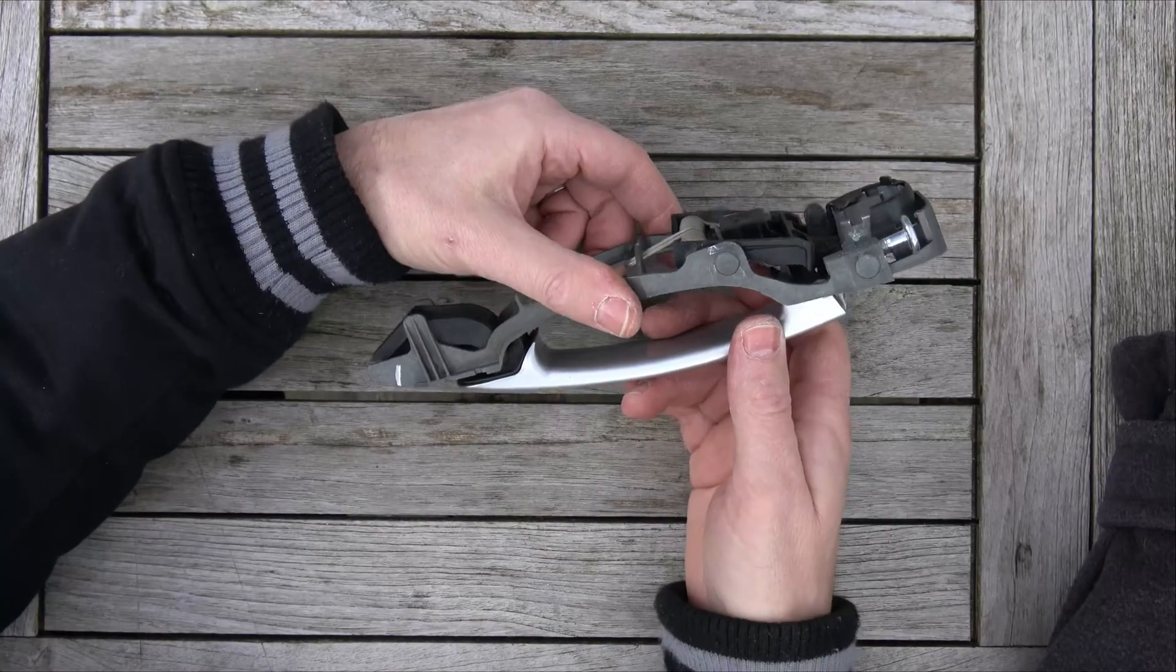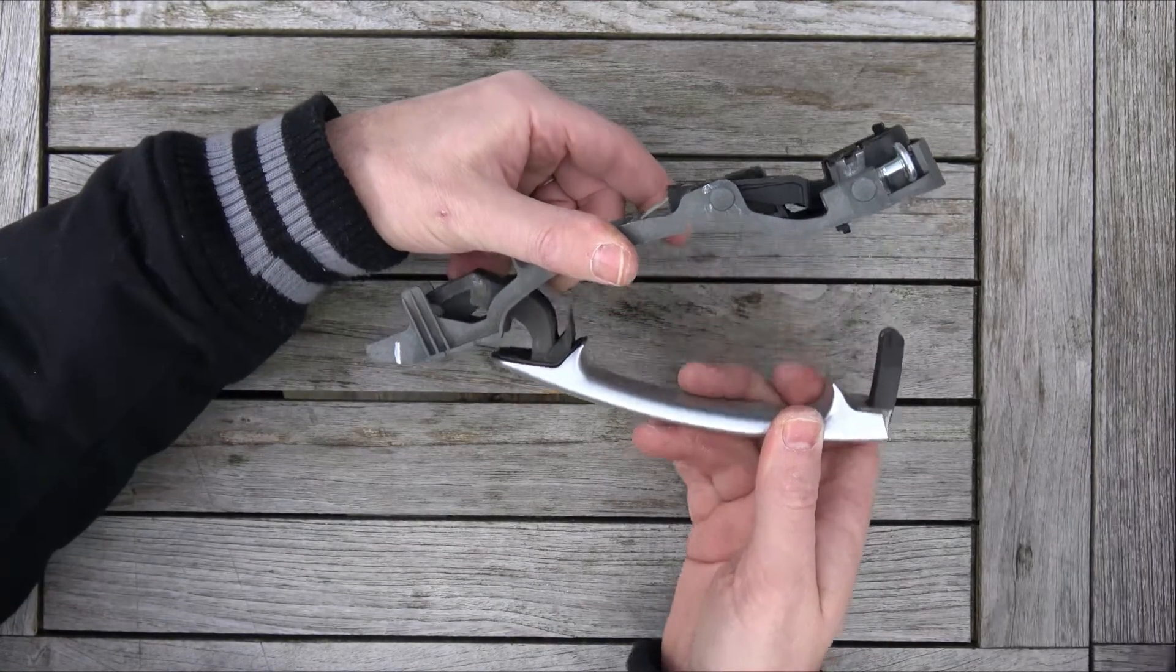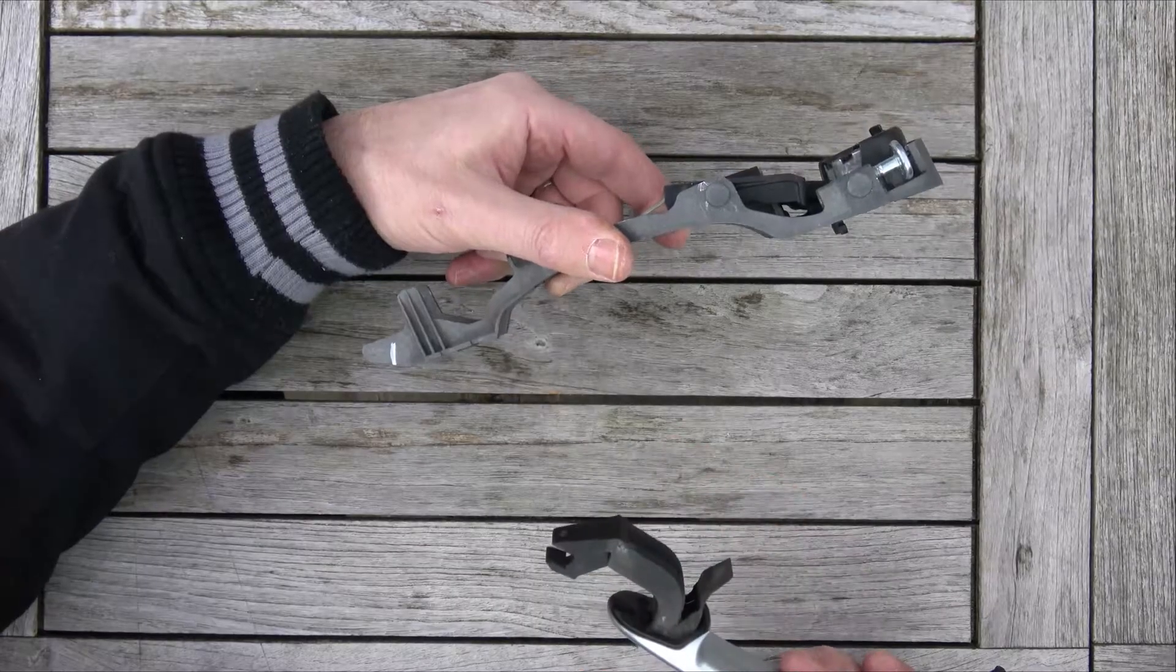Now we need to remove the handle. What we have to do is go back that way and then pull out. You can see now how easy that comes out.